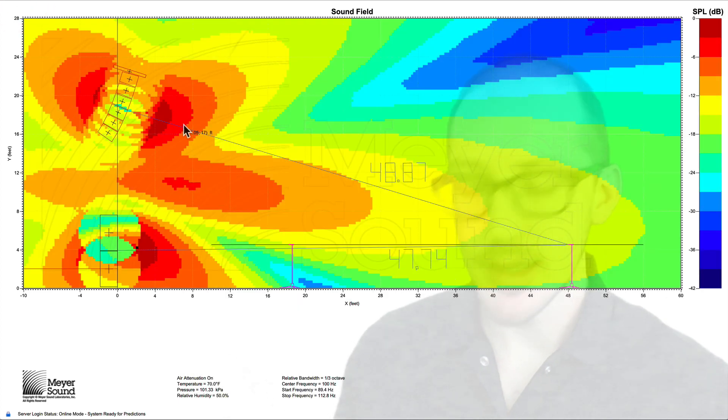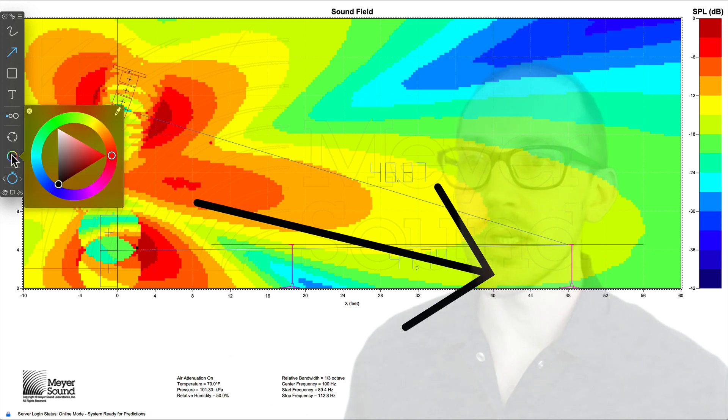Back over here in my design, I'll change this from one to four. Hit predict. And now we have a much better result here. So now instead of a null through the center of the audience, now we have summation pointing back this way.